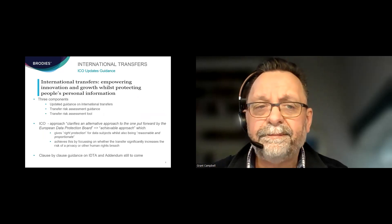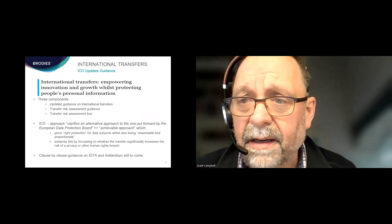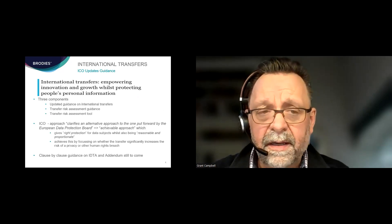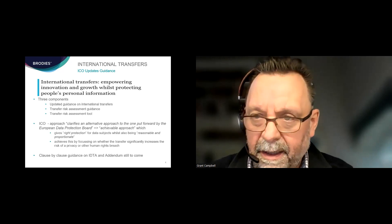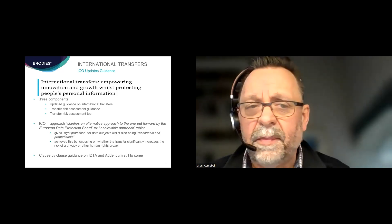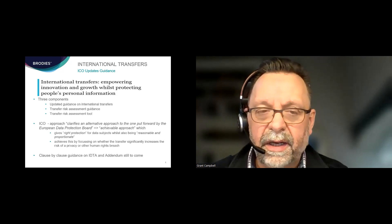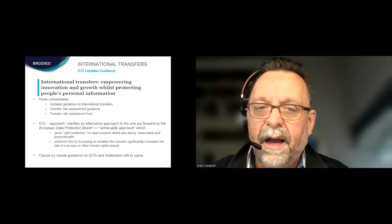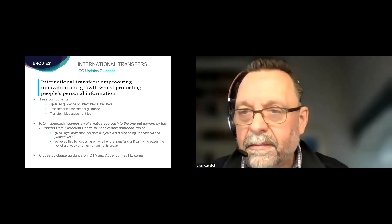The three components of the guidance are: updated guidance on international transfers, the transfer risk assessment guidance — those two things I will talk to — and then the transfer risk assessment tool, which Rachel will cover. In general terms, the ICO's blog is setting out an alternative approach to the one the EDPB put forward: one that balances giving the right protection for data subjects whilst also being reasonable and proportionate, focused on whether the transfer significantly increases the risk of a privacy or human rights breach.